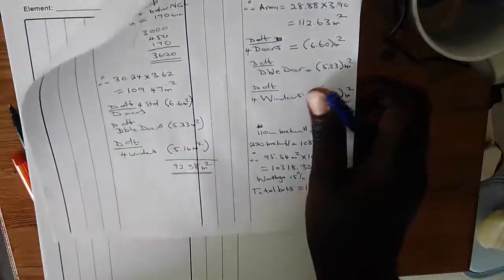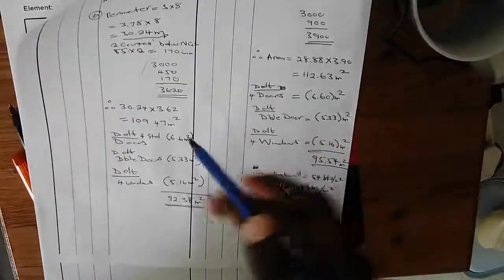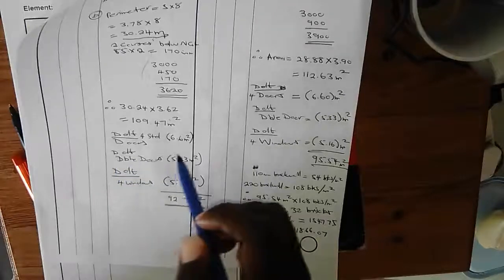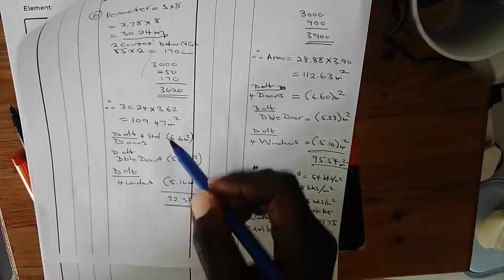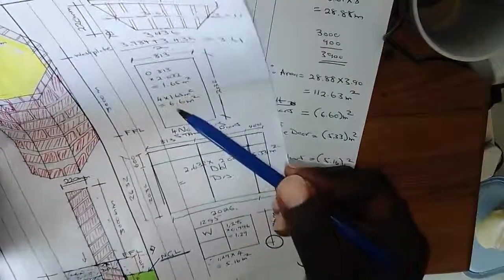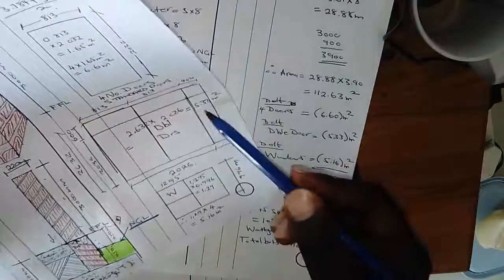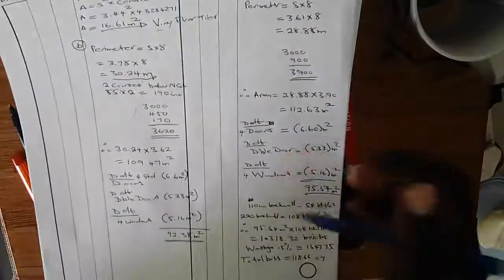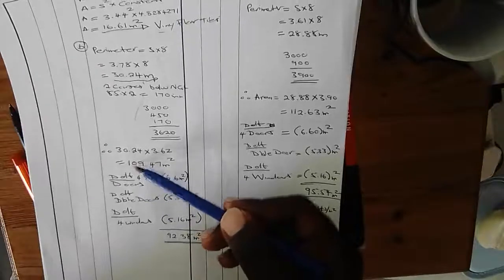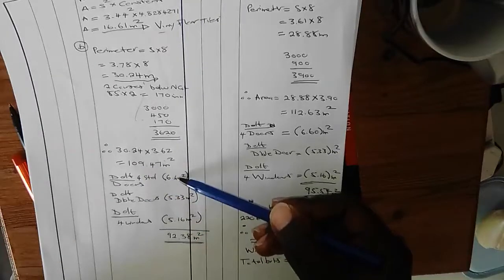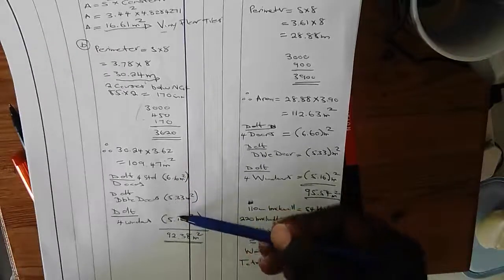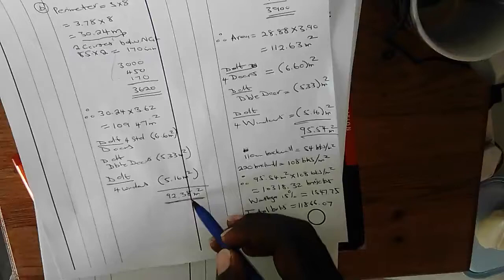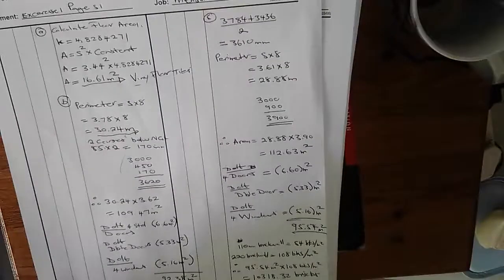Now this is where it gets interesting. They want the net area — remember, net means after deductions. We need to deduct the areas where doors and windows occupy space. From my drawing I had already calculated: four doors at 6.6 m², the double door at 5.33 m², and four windows at 5.16 m². Deducting all of these gives a total of 92.38 square meters for external plaster.